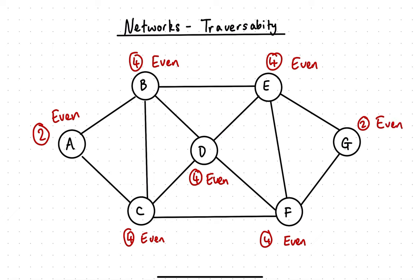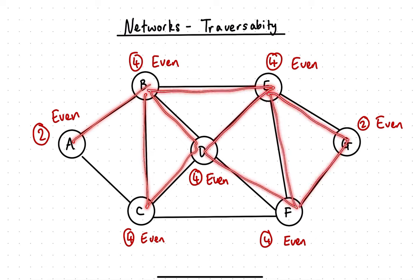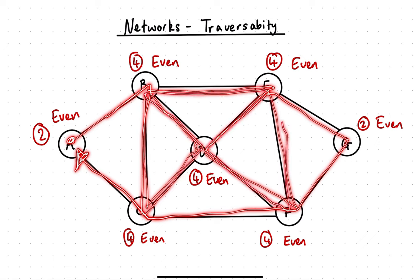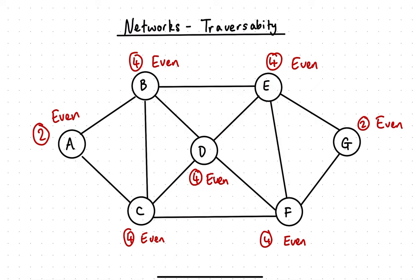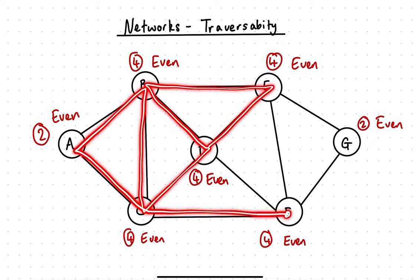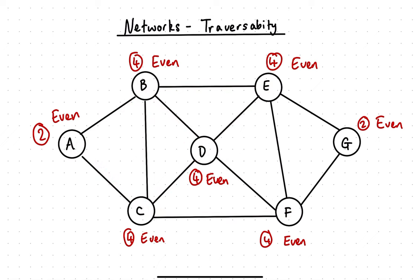If there are no odd nodes in your network, the diagram is what we call fully traversable. A fully traversable diagram means you can start at any node, travel around the whole diagram going along every edge exactly once, and you'll end up back where you started. So if I start at A, I'll finish at A. If I started at F, I'll end up finishing at F. I can choose any of these nodes to start and finish.